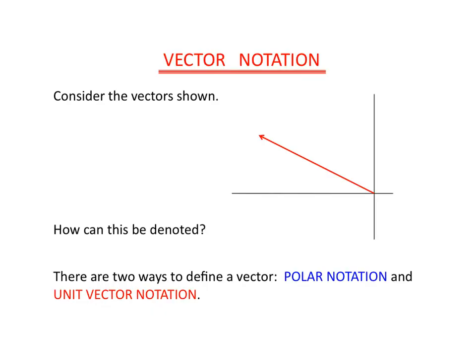Greetings. This video is going to take a look at the idea of vectors being described from the perspective of unit vector notation. Let's say you have a vector. I'll call it vector A. How can you denote that vector? You can either denote it in polar notation or unit vector notation.